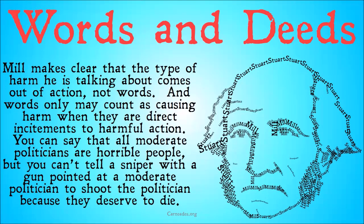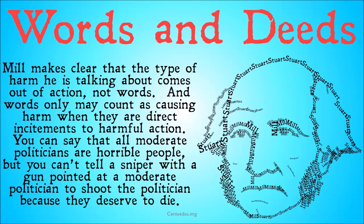Mill makes clear that the type of harm he is talking about comes out of actions, not words. Words may only count as causing harm when they are direct incitements to harmful action. You can say that all moderate politicians are horrible people, but you can't tell a sniper with a gun pointed at a moderate politician to shoot that politician because they deserve to die. In the second case, the harm is caused by an action — namely someone shooting someone — and your words directly and immediately cause that. It's not some long, indirect chain of events. It has to be direct, and it has to be the action that causes harm, not the words themselves.